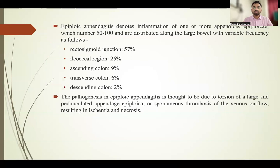Epiploic appendicitis denotes inflammation of one or more appendices epiploicae, which number 50 to 100 and are distributed along the large bowel. The maximum are in the rectosigmoid junction of the colon and the least are noted in the descending colon. The pathogenesis is due to torsion of a large or pedunculated appendage epiploicae or spontaneous thrombosis of venous outflow, resulting in ischemia and necrosis.